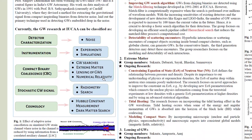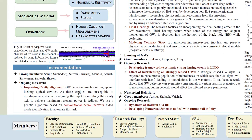Currently the gravitational wave research at IUCAA can be classified into these five broad categories. Let us first discuss the group that is working on instrumentation.